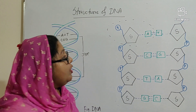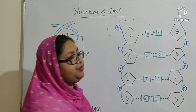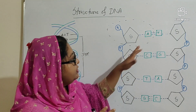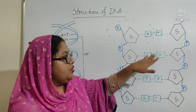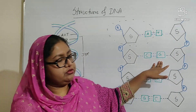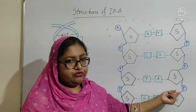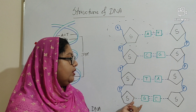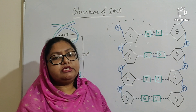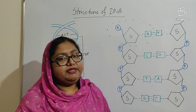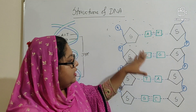Adenine never combines with guanine — it always makes bonds with thymine. So, purine always combines with pyrimidine. Adenine combines with thymine by two hydrogen bonds; cytosine combines with guanine by three hydrogen bonds. Similarly, when thymine remains in one strand, it combines with adenine of another strand. And in the case of guanine, when guanine remains in one strand, in the opposite strand there will be cytosine. So these two strands are complementary to each other but not similar — they are anti-parallel structures.